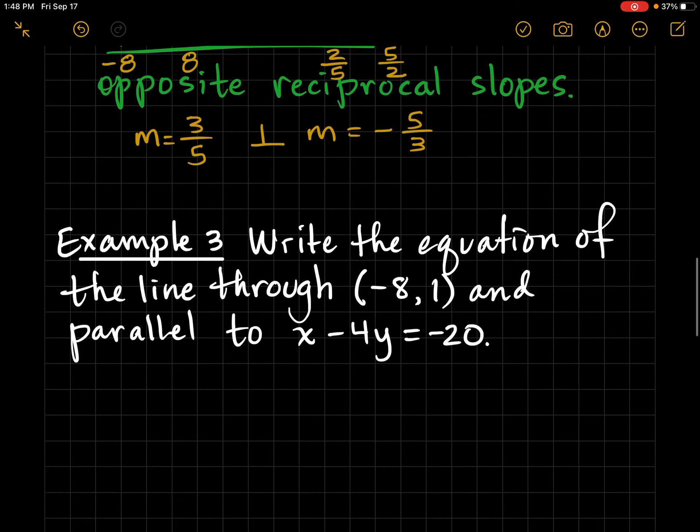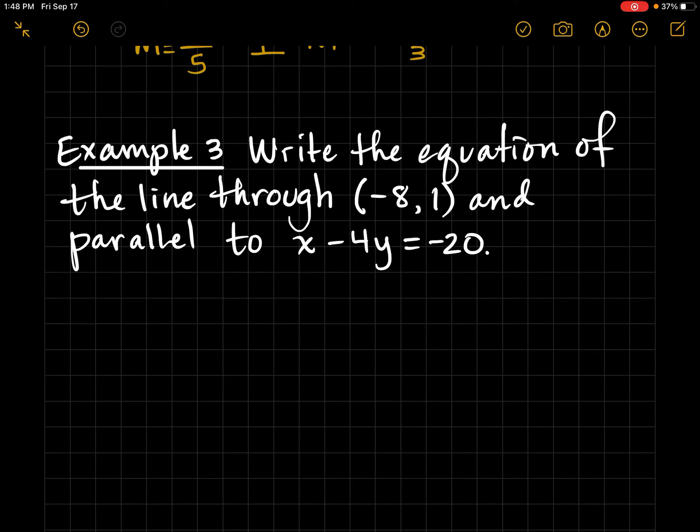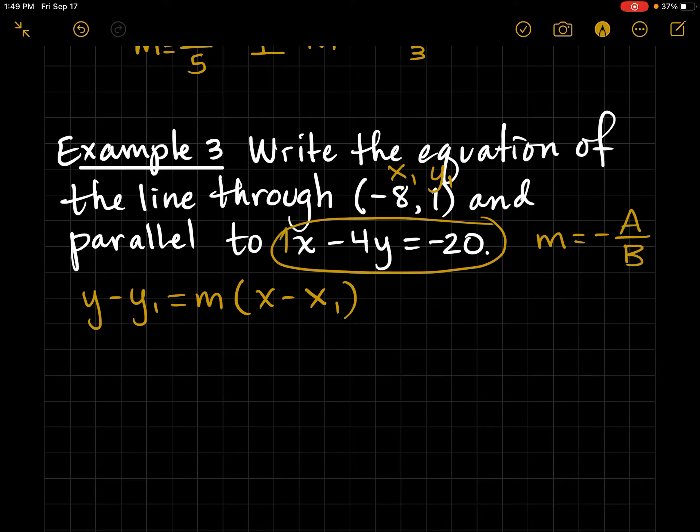Example 3: Write the equation of the line through (-8, 1) and parallel to x - 4y = -20. Let's remember our formula right away. Y minus Y1 equals M times X minus X1. In order to use this formula, we need a slope and a point. We already have a point, X1, Y1. And now I need a slope. So the first thing I'm going to do is figure out what's the slope of this line. And since it's in standard form, negative A over B is the quickest way to get there. A is 1. And B is negative 4. Negative over negative is positive. So the slope of that line is 1 fourth.